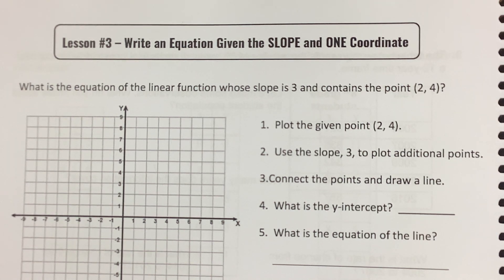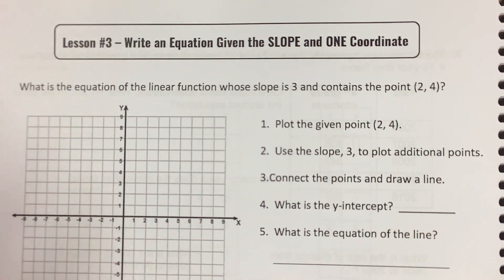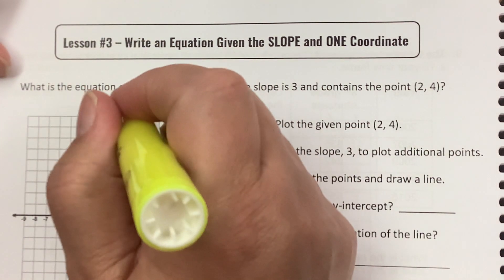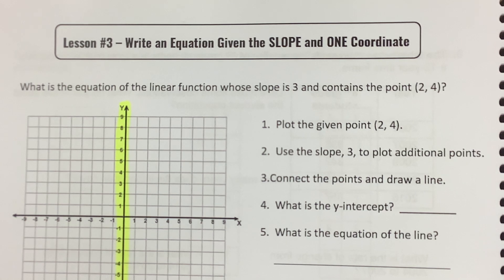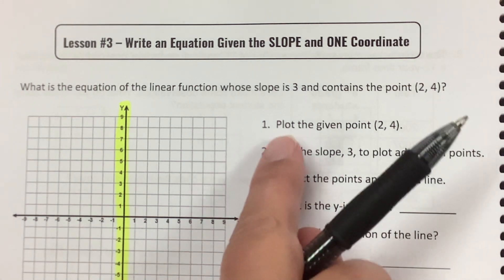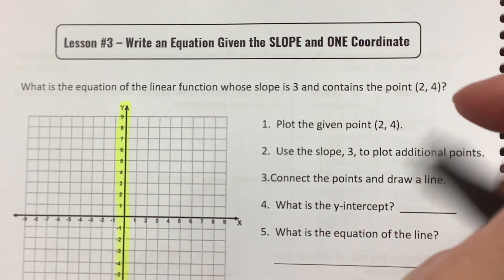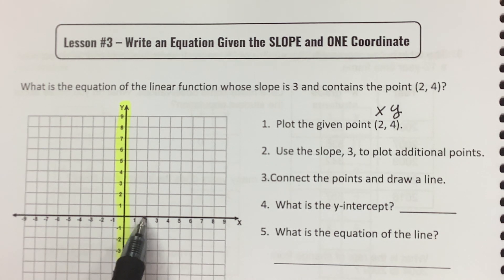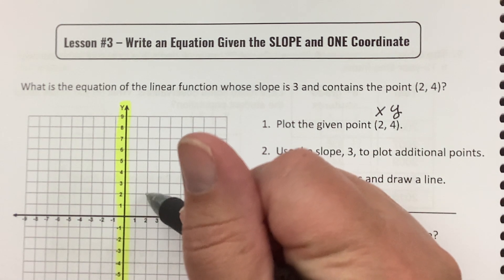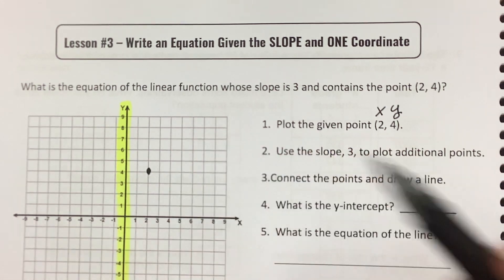What is the equation of the linear function whose slope is 3 and contains the point (2, 4)? Now, I'm going to follow these directions, but first, let me grab a yellow highlighter because I still like to highlight that line yellow. It reminds me to look for the y-intercept. y for yellow, y for y-intercept. All right, now plot the given point (2, 4). That means that the x is 2 and the y is 4. So along the x-line I go to 2, then up the y-line I go to 4 to get my point (2, 4).